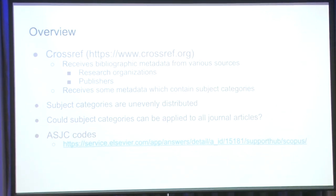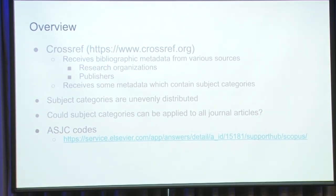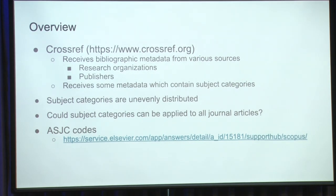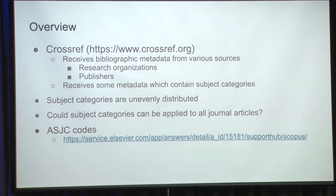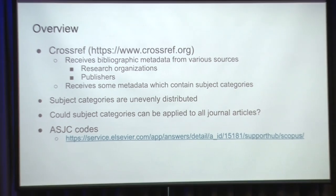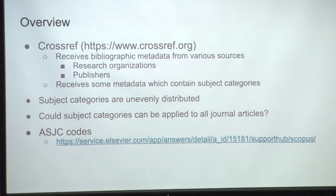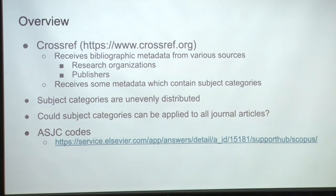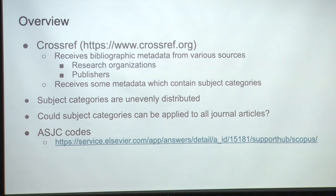We receive a lot of bibliographic metadata from various sources, such as research organizations and publishers. Some of the metadata that we receive contains subject categories — this is all from Elsevier at this point. So across our metadata, the categories are unevenly distributed, because Crossref doesn't have subjects in the rest of our journals. My R&D department was curious to see if we could use subject categories from Elsevier and infer them across the other journal titles and articles.